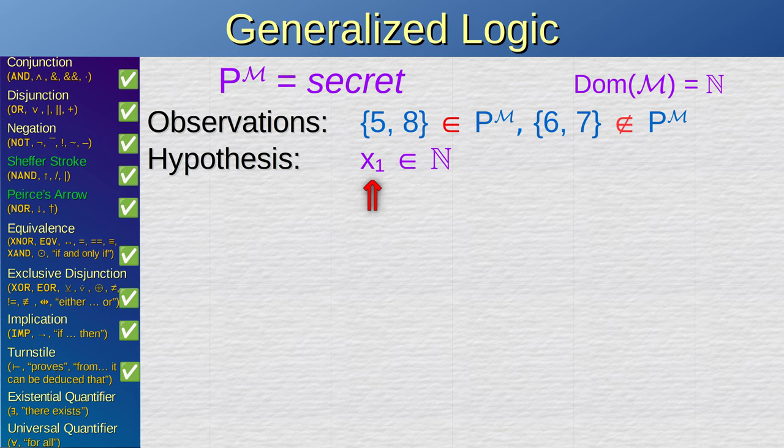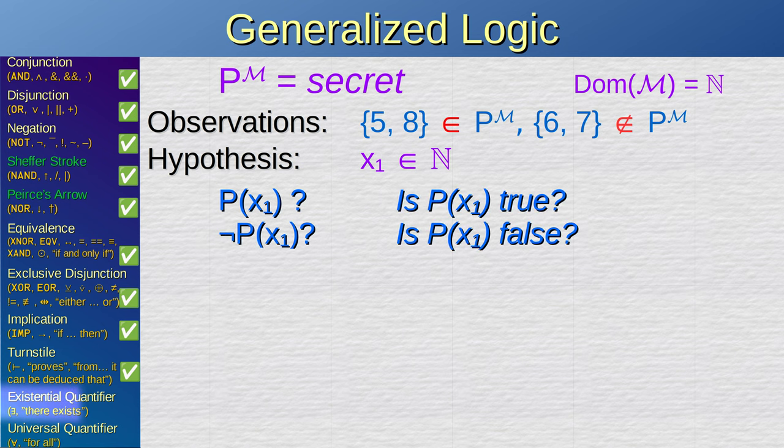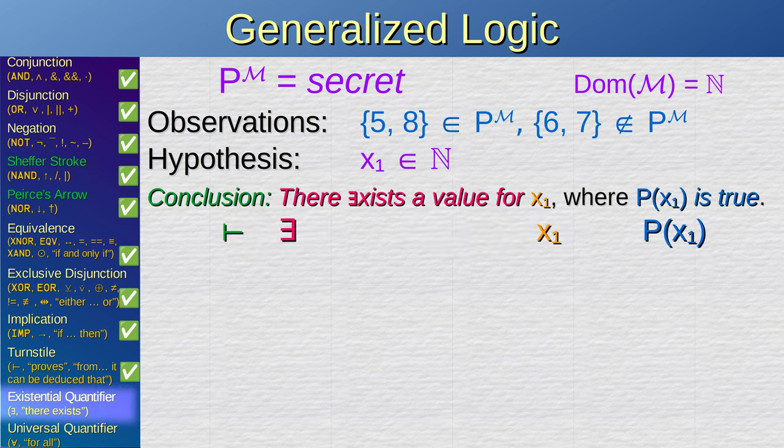Now suppose we have some variable x1 that is any natural number. What is the truth value of Px1? That is, does the machine accept x1? We don't know. But from these observations, you conclude that Px1 is true at least for some values of x1. In logic, you can express this sort of thing using an existential quantifier, which looks like a mirrored letter E. This expression says that there exists some value of x1 for which Px1 is true.